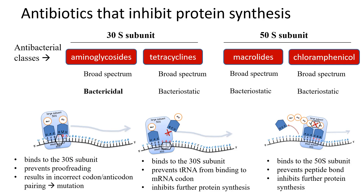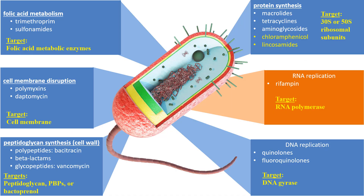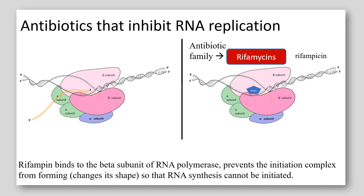All four classes have broad-spectrum activity on bacteria. The fifth mode of action is to prevent RNA replication, and the target in this case is RNA polymerase. The antibacterial agents that do this are known as rifamycins. They bind to the beta subunit of the initiating transcription complex and prevent the function of RNA polymerase. If RNA polymerase cannot transcribe messenger RNA from DNA, further protein synthesis will also be prevented.